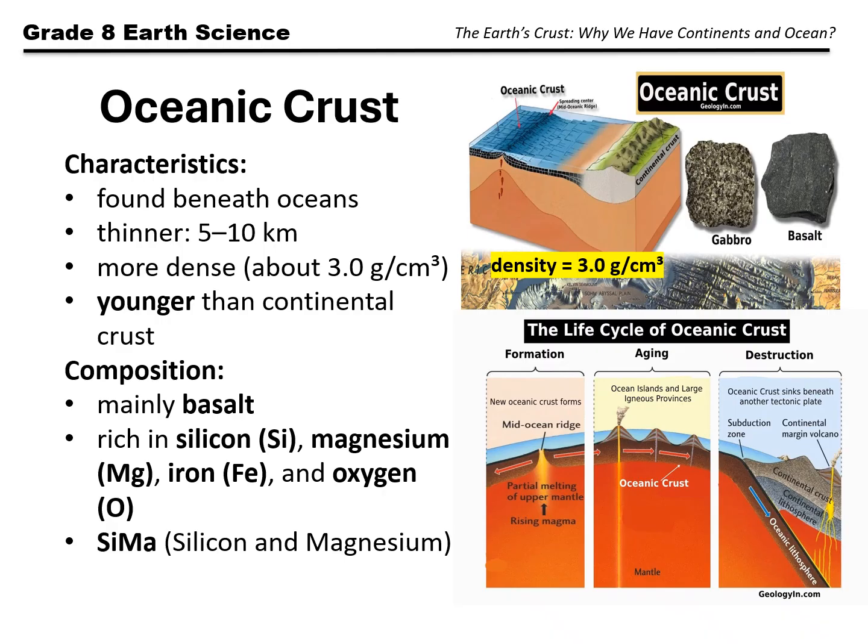The oceanic crust is geologically young, mostly less than 200 million years old. This is because oceanic crust is continuously recycled. New crust forms at mid-ocean ridges, and old crust sinks and melts at subduction zones. There will be a separate lesson for mid-ocean ridges and subduction zones later in the quarter.